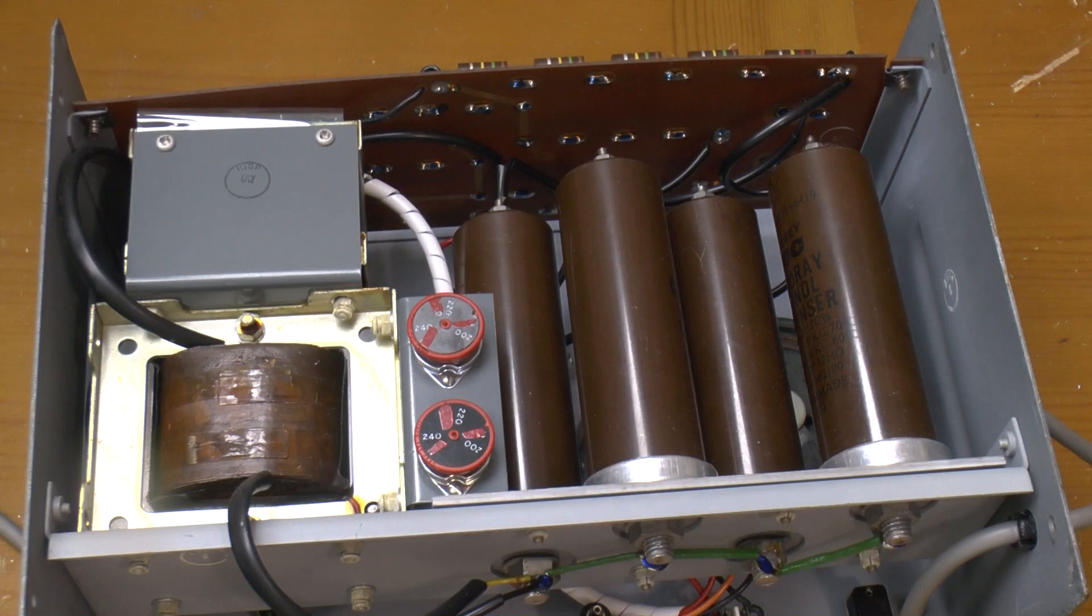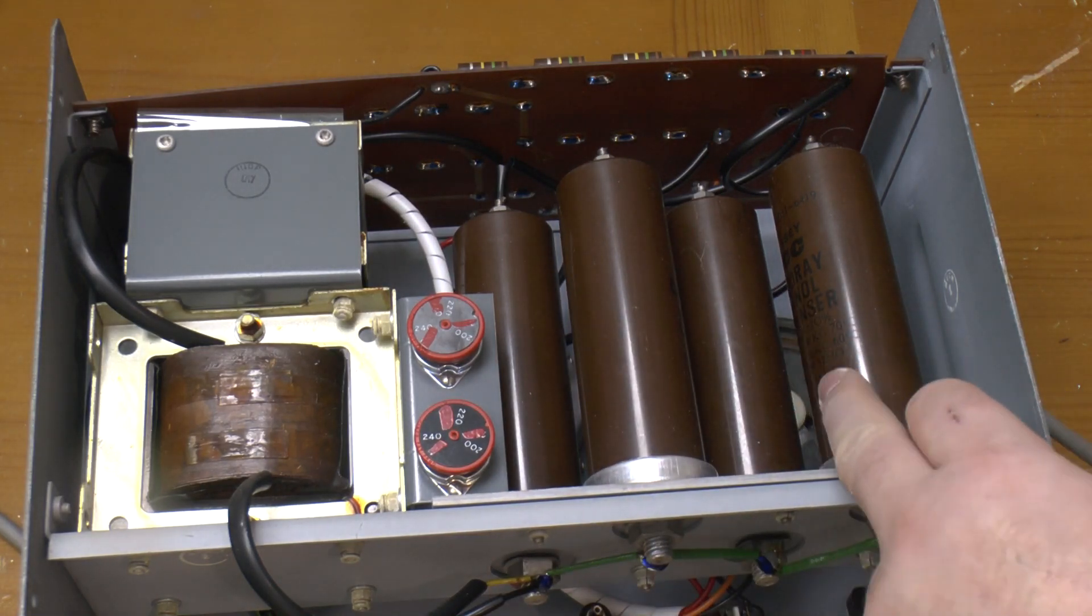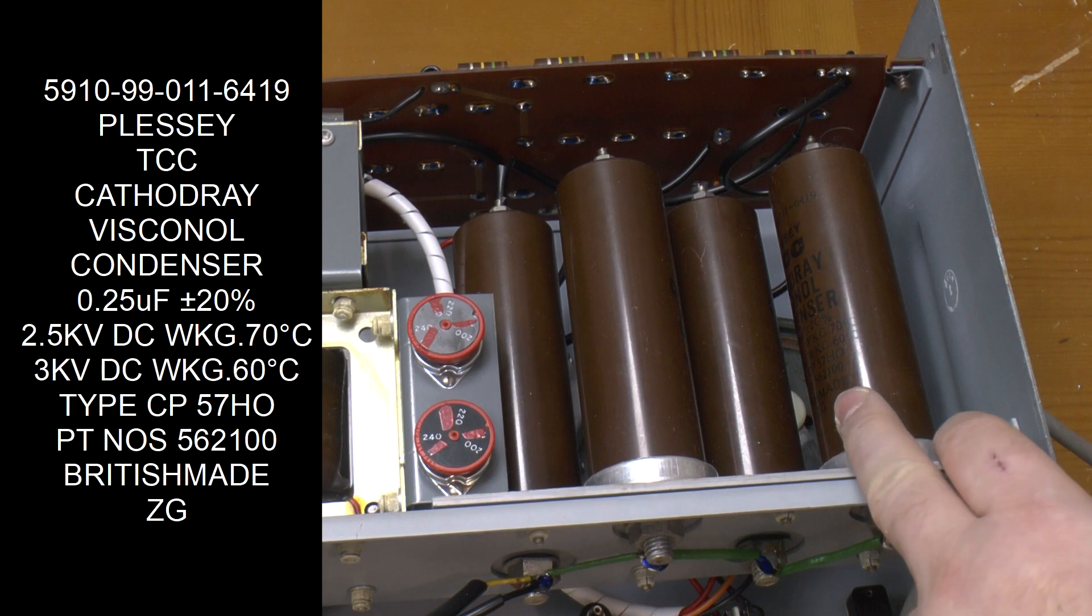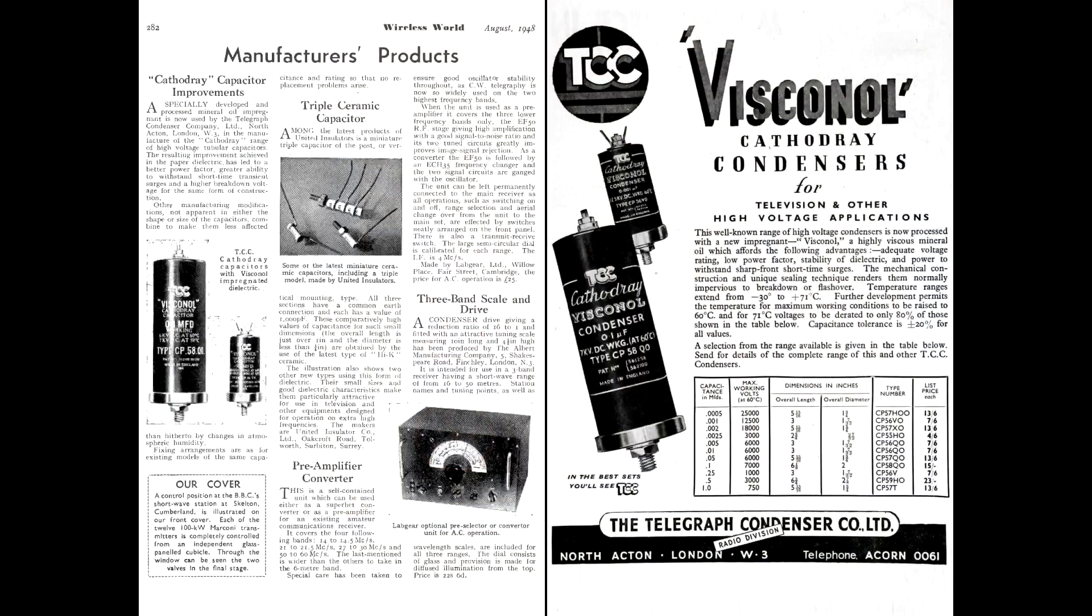The first thing that catches your eye when taking the lid off is this set of four capacitors. They're all TCC cathedrae viscanol condensers, each rated at a quarter of a microfarad at two and a half kilovolts or three kilovolts if running a little cooler. Viscanol capacitors were introduced in the late 1940s.